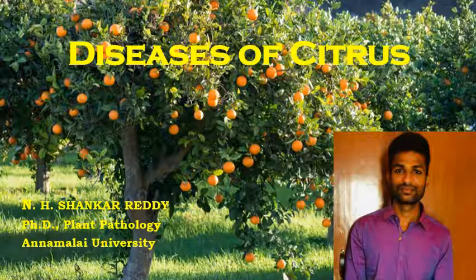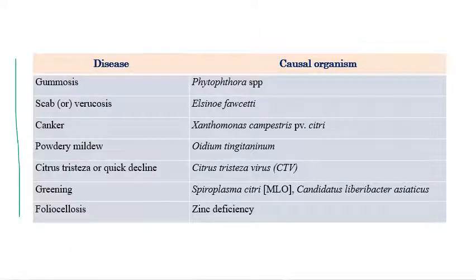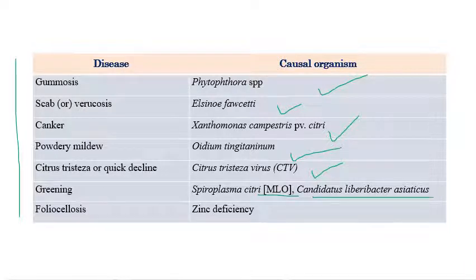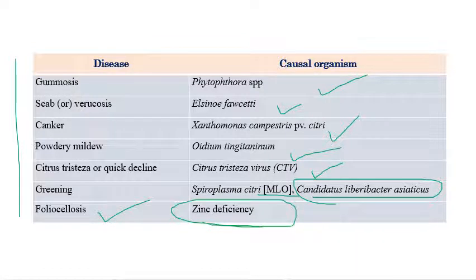Welcome to a lecture on diseases of citrus. My name is N. Shankar Reddy and I am doing a PhD in Plant Pathology at Annamalai University. The important diseases we will cover are: gummosis caused by Phytophthora species, scab or verrucosis caused by Elsinoë fawcettii, canker caused by Xanthomonas campestris pv. citri, powdery mildew, citrus tristeza virus or quick decline, citrus greening caused by Spiroplasma citri or Candidatus Liberibacter asiaticus, and the nutritional disorder citrus follioclosis caused by zinc deficiency.